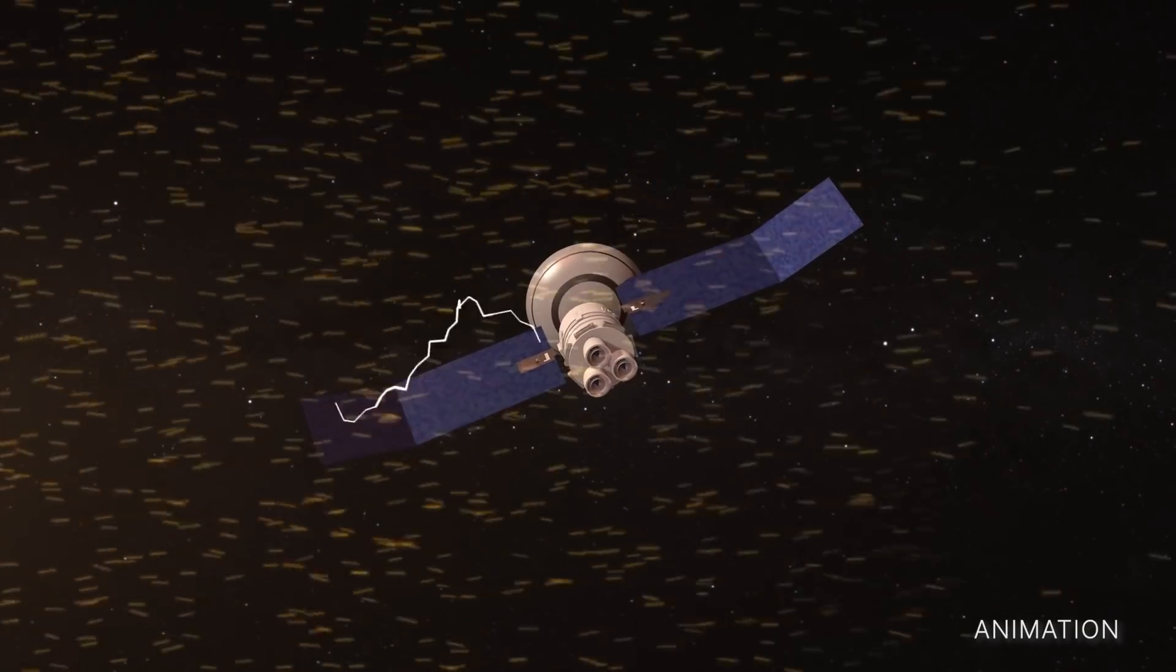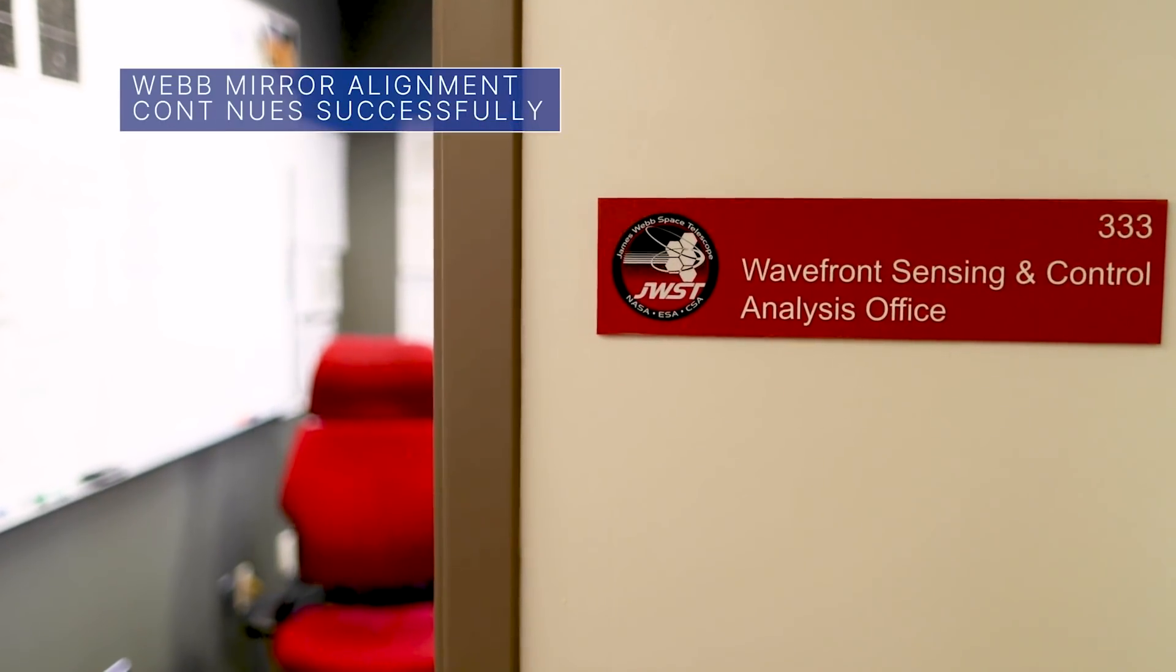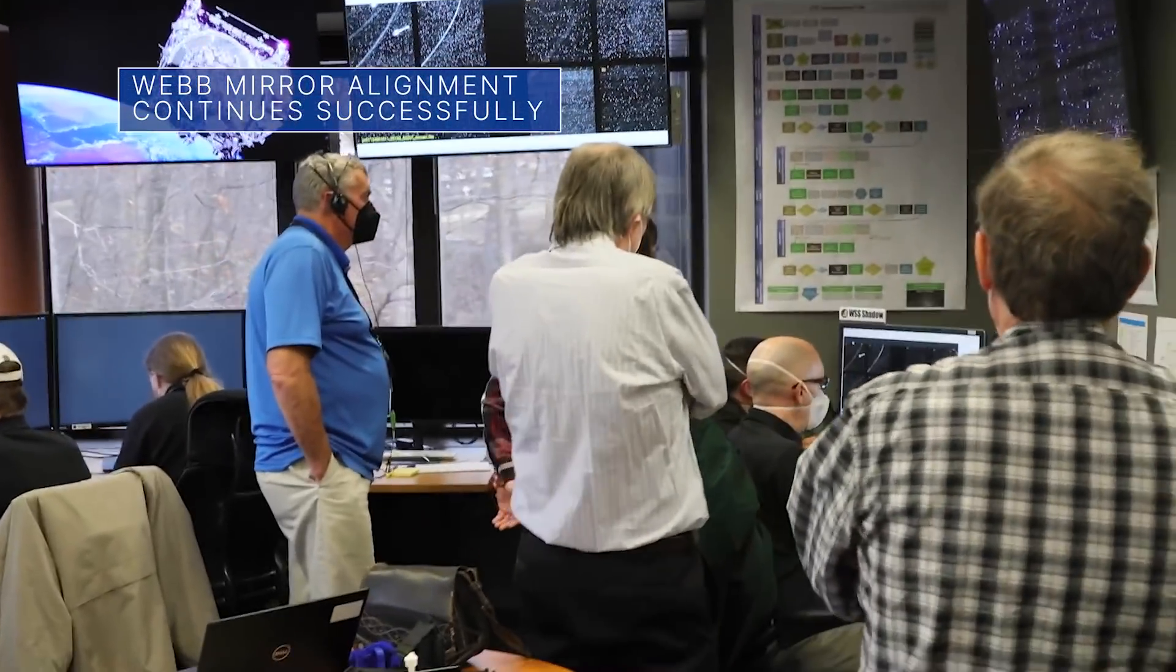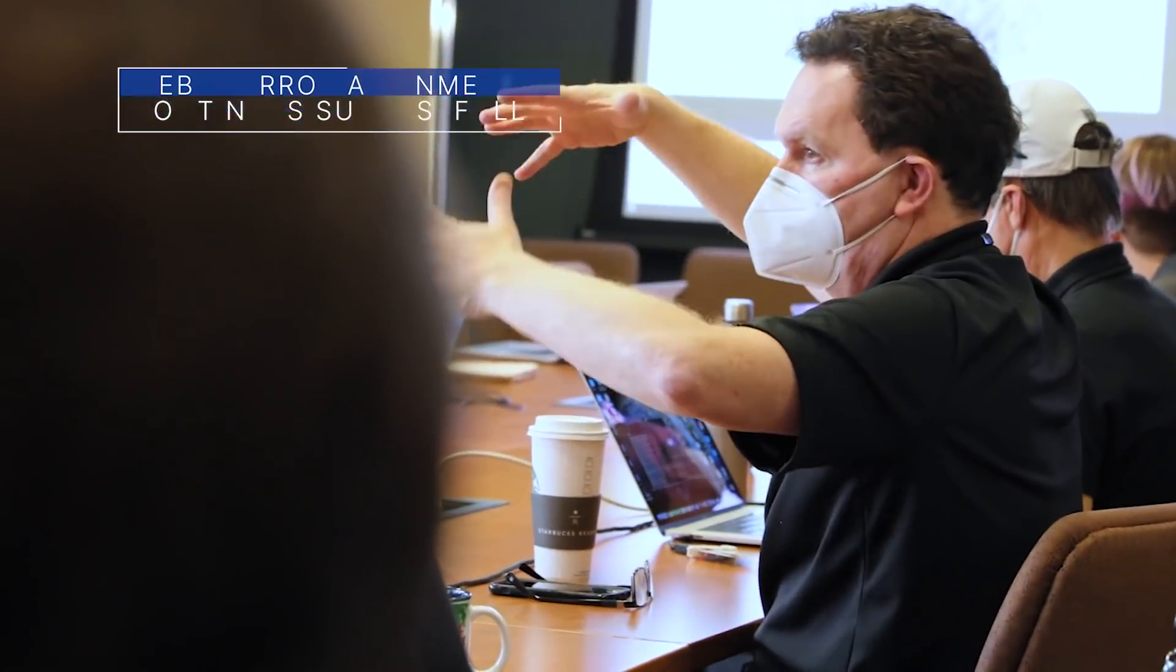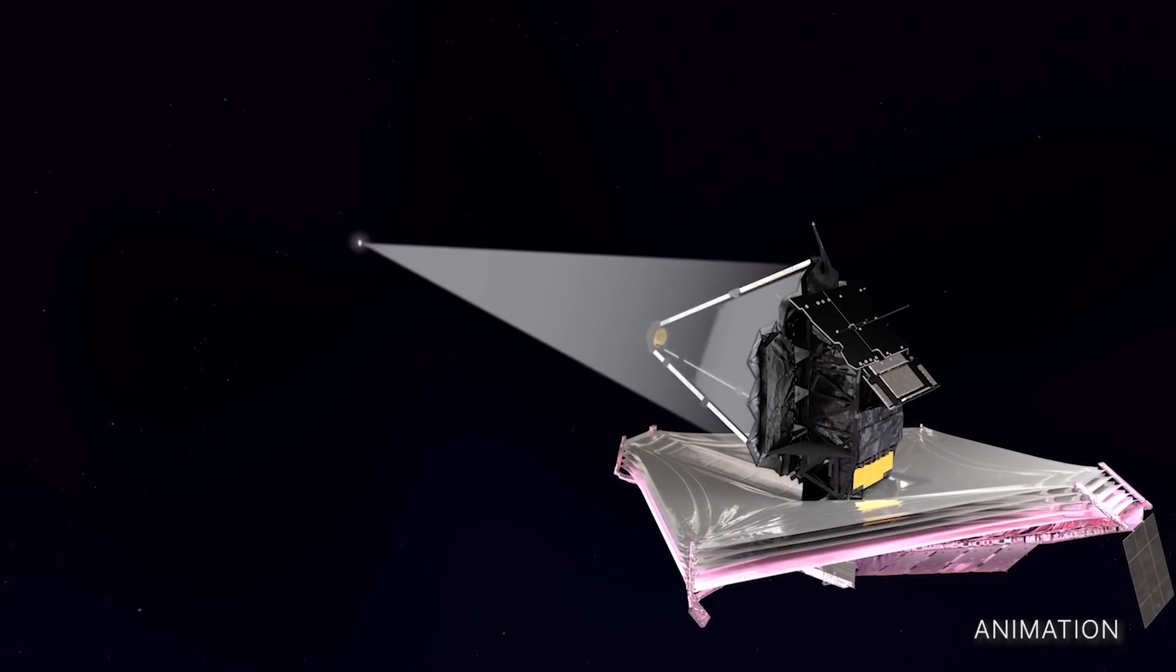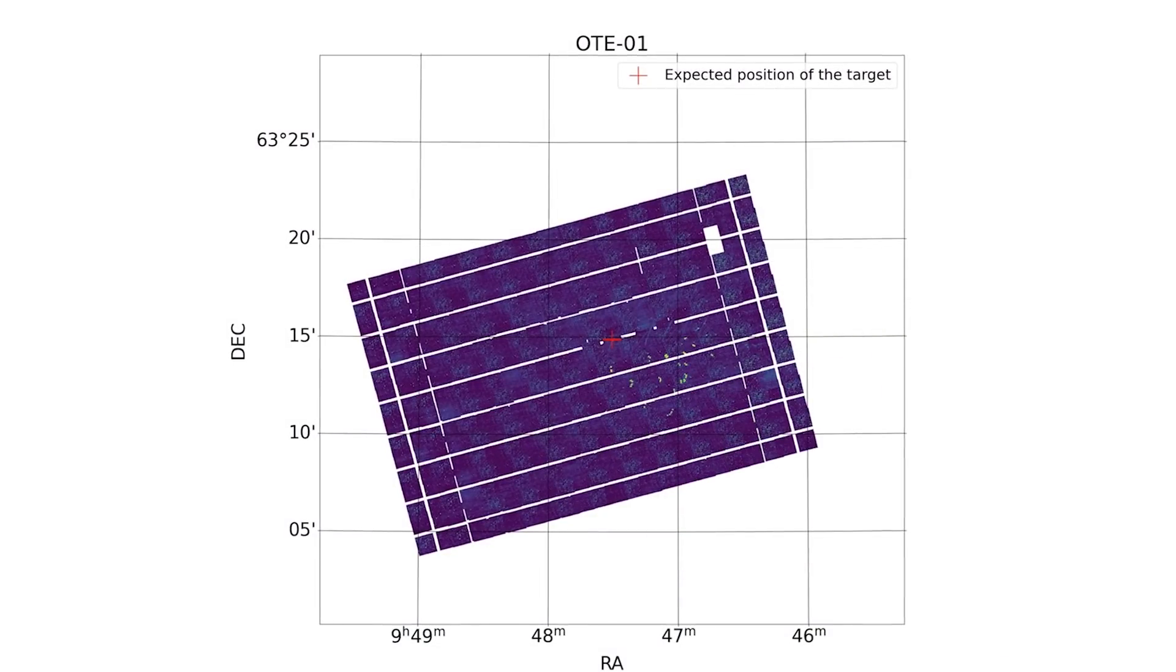The James Webb Space Telescope team continues to work through the various phases of mirror alignment needed to perfect the observatory's focus. The team recently completed the segment alignment and image stacking phases.